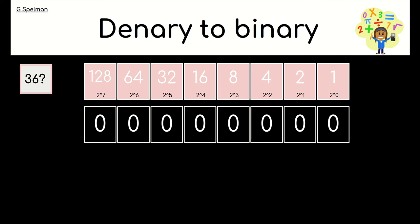So denary to binary, do you think you can have a go at converting denary to binary? What would 36 look like in binary? That's quite an easy one. I think you probably spotted that you could have 32 and 4, and that would make 36. However, it's not always that easy, so I'm going to show you a method. There is a different method on Bitesize that you can look at if you don't like this one, but this is the method I'm showing you.